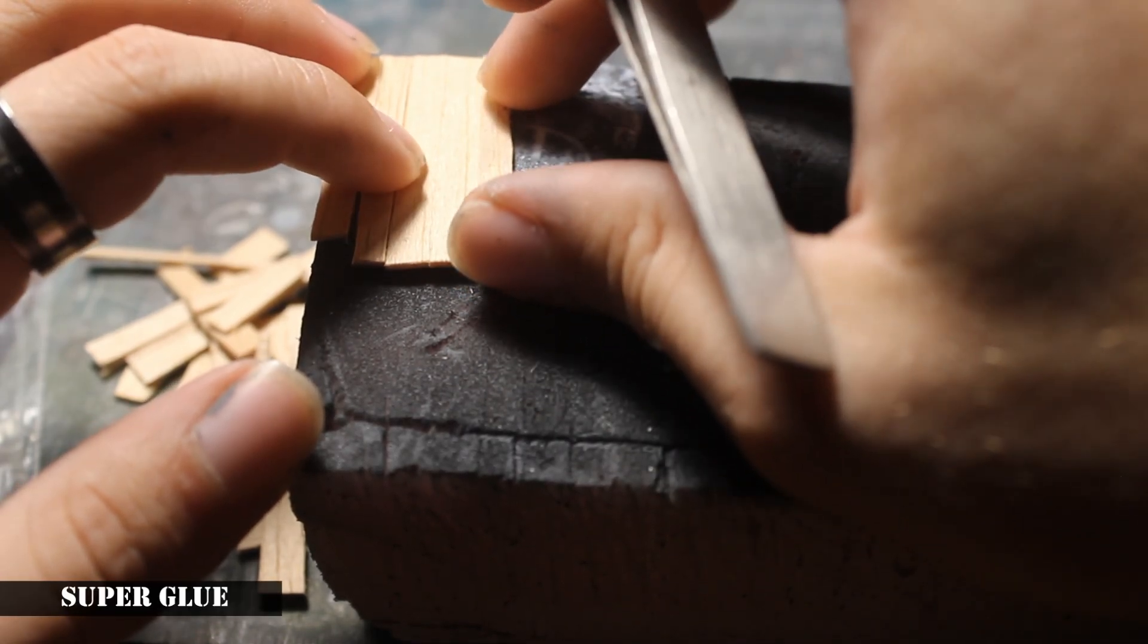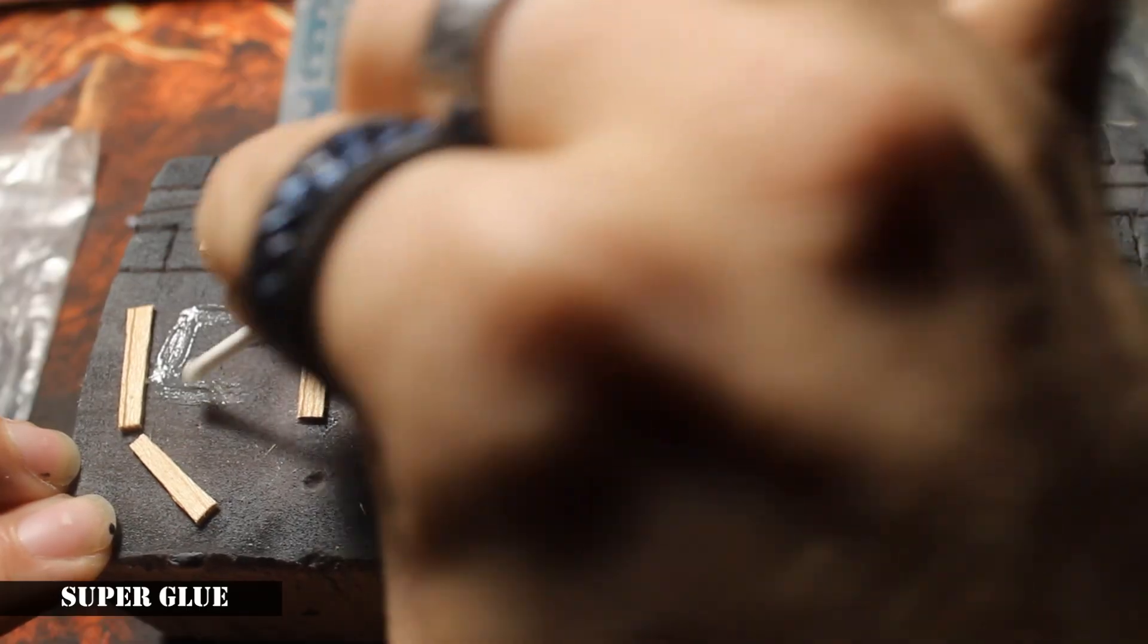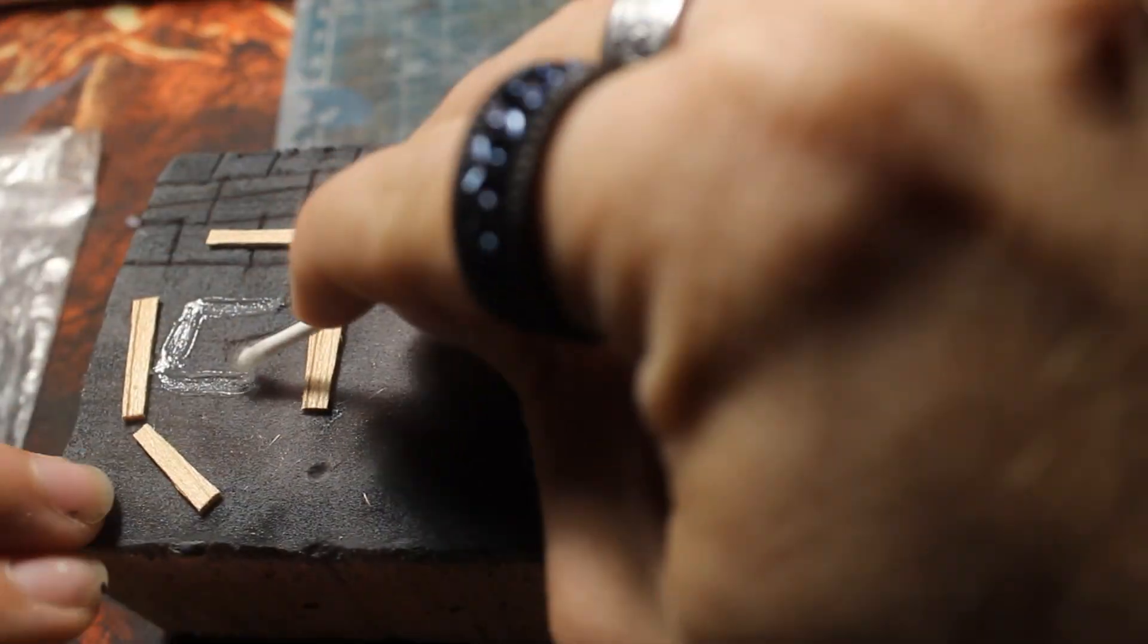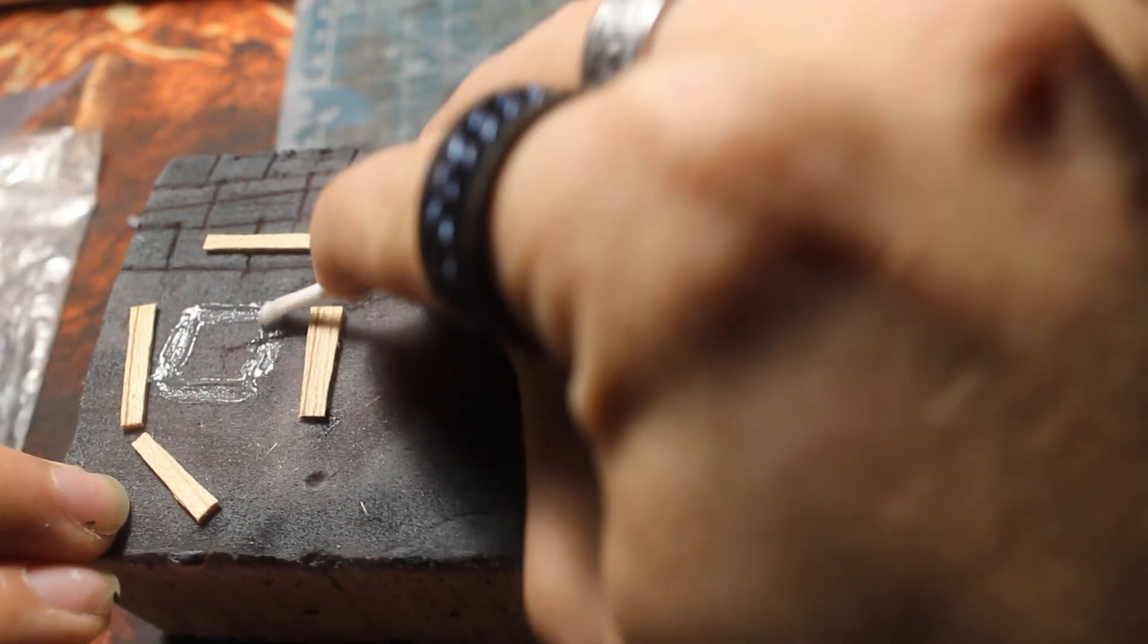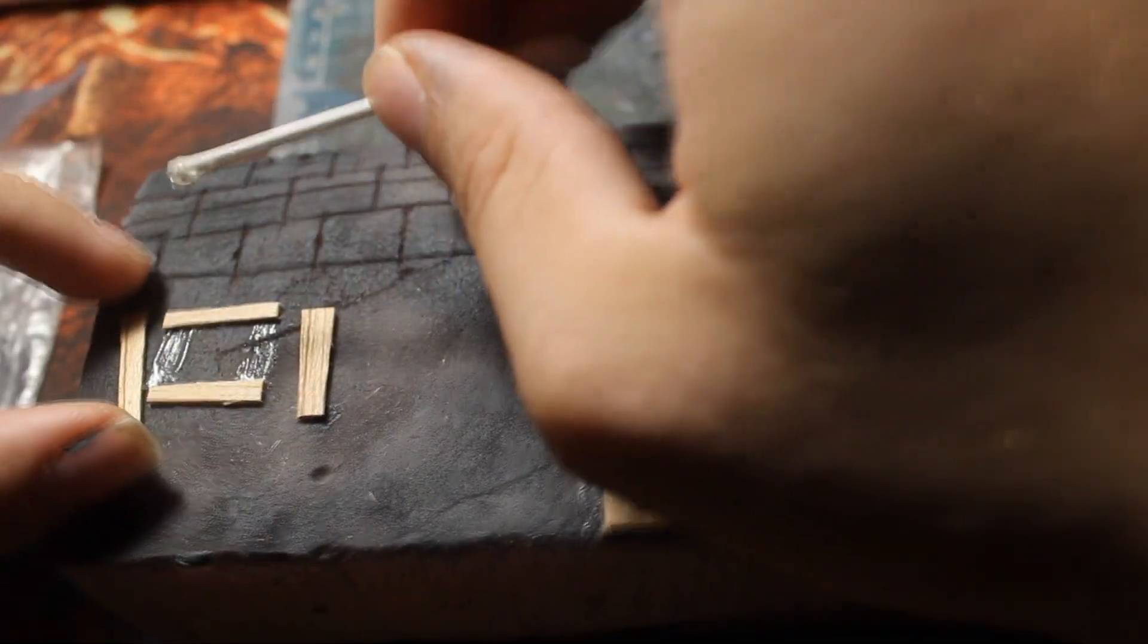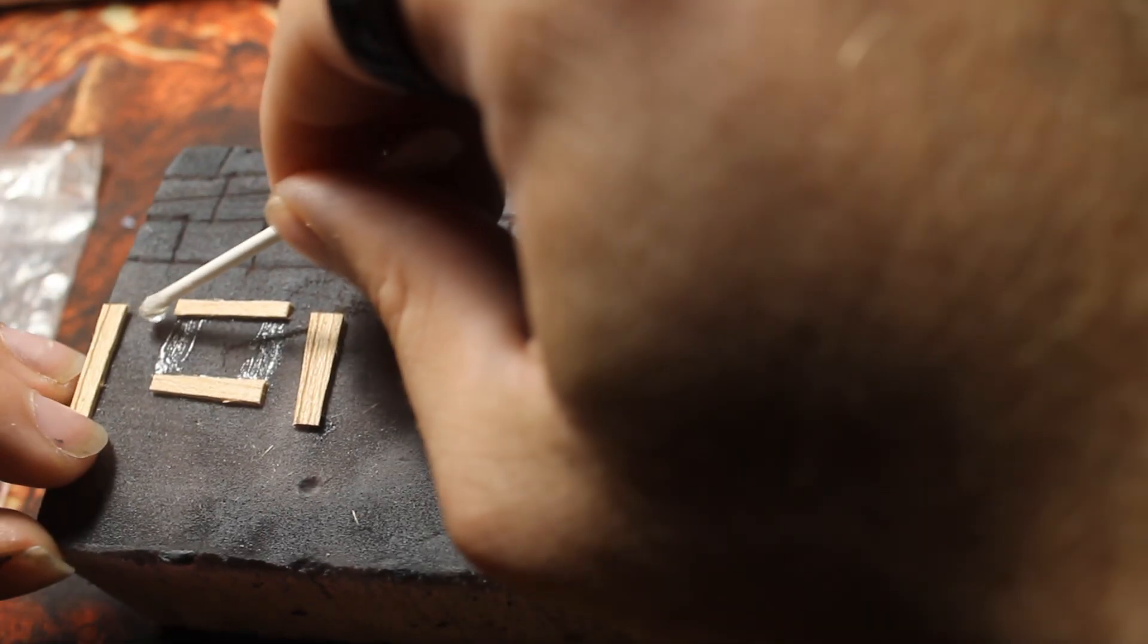At that time, houses were mostly built from wood and brick. For window frames, I also use balsa wood planks and glue them with super glue.